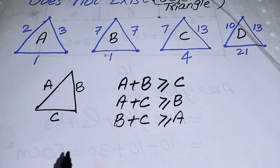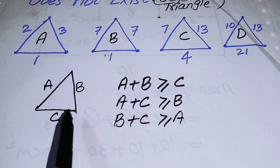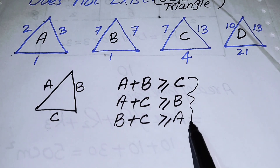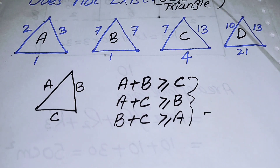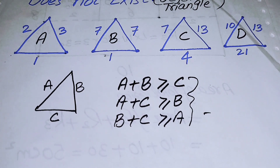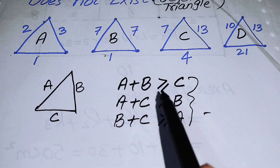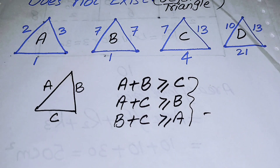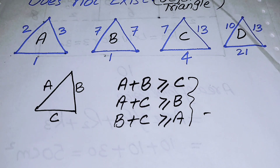If you have a valid triangle, it must hold all three of these conditions. We will check this concept on all of the given triangles, and then explain the concept of the degenerate triangle.